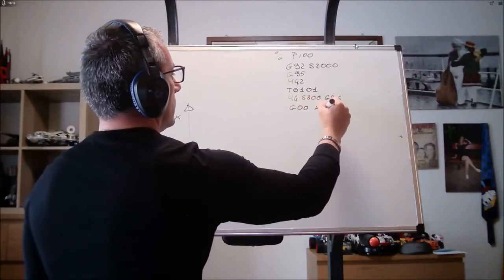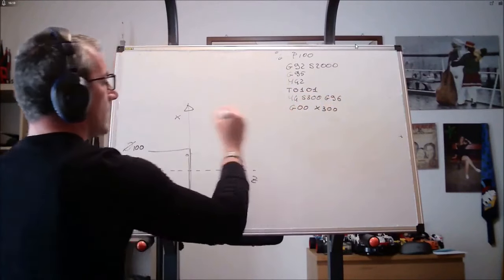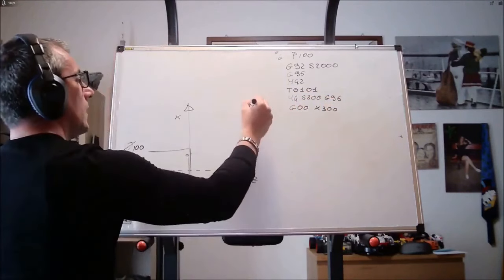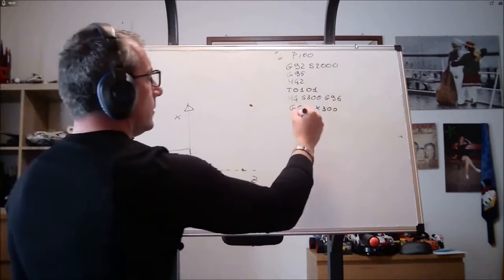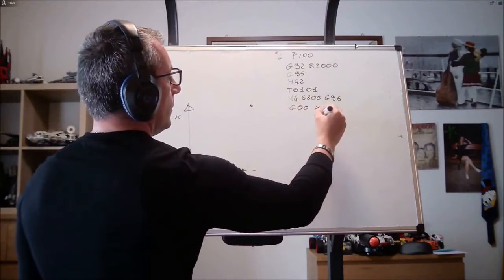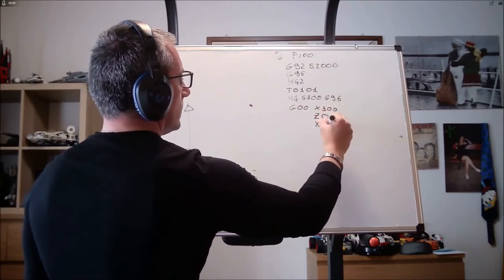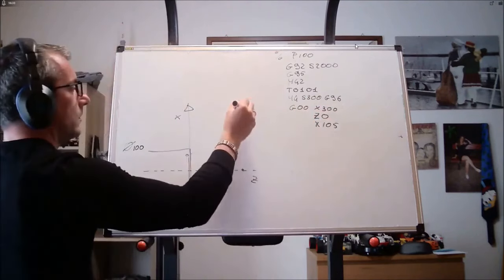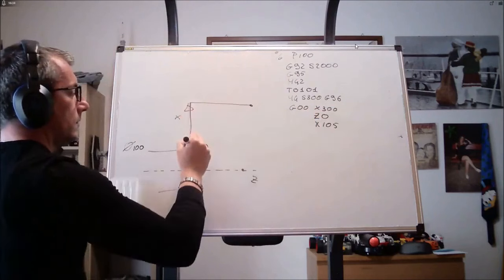Then I start in rapid. G0, X300. I won't repeat it. G0 is not needed, but if I repeat it, it won't hurt. Z0. X105. Z0. X105.